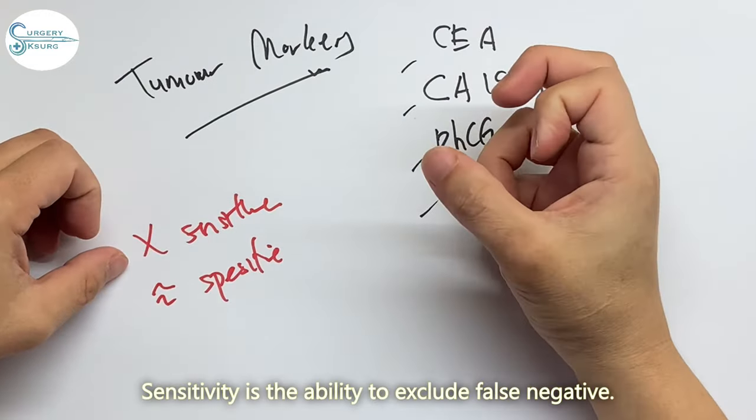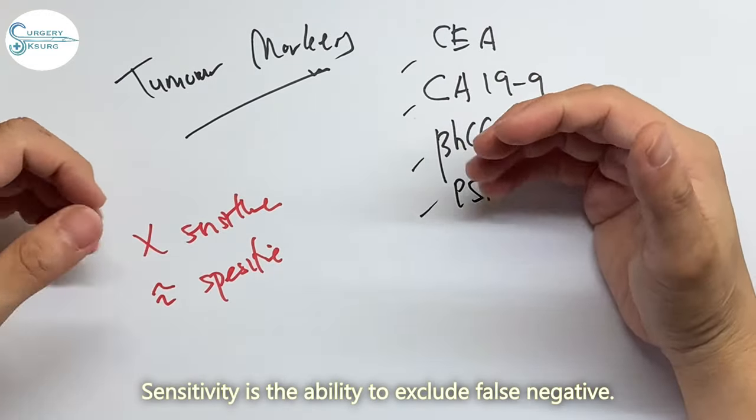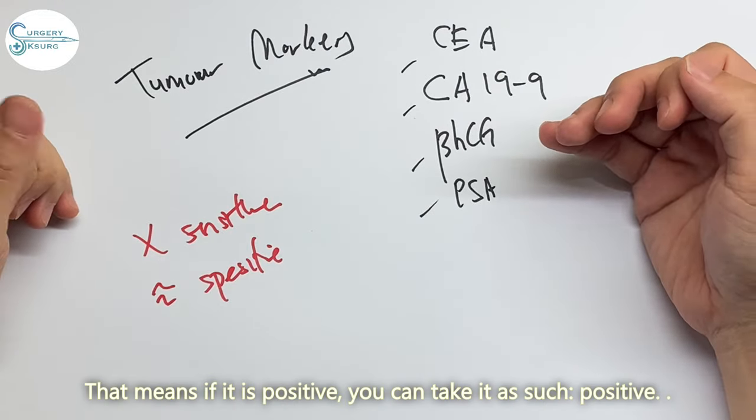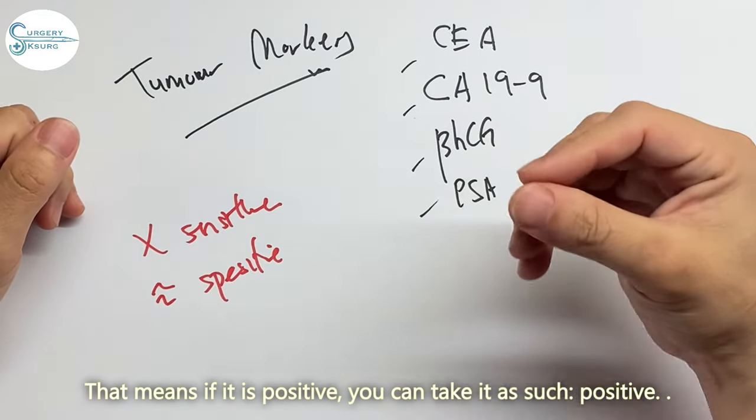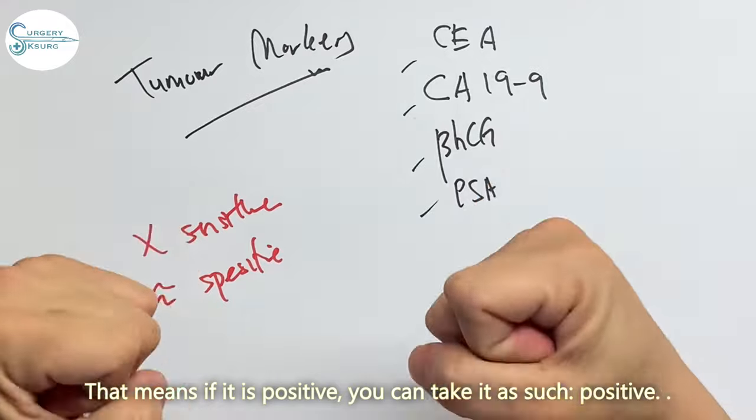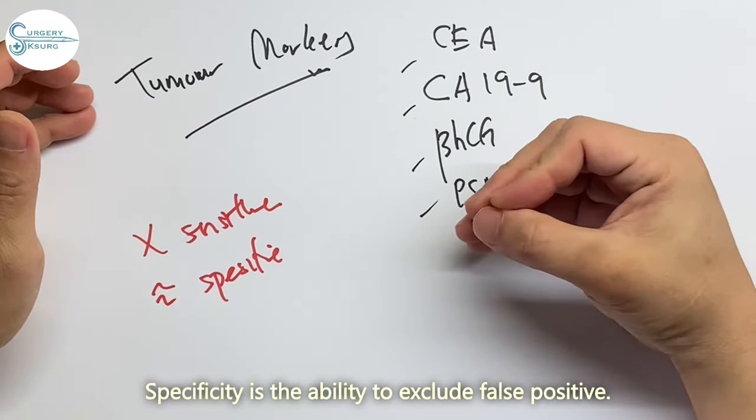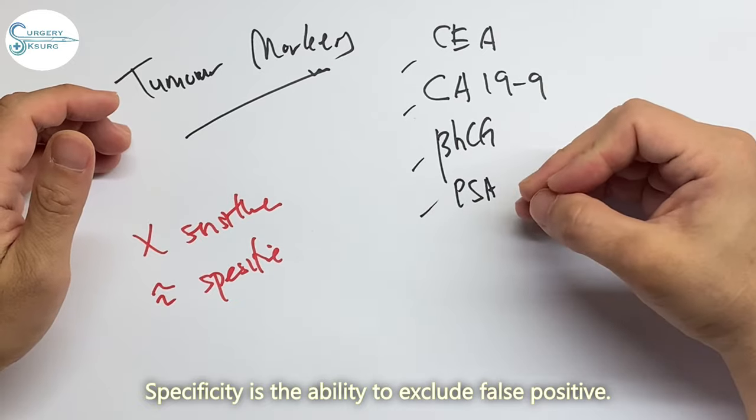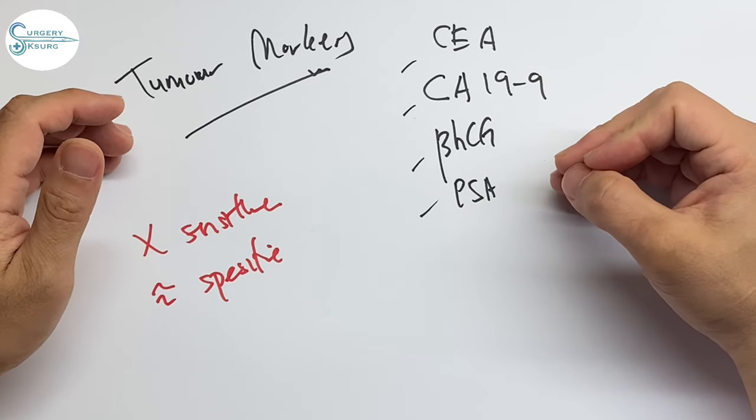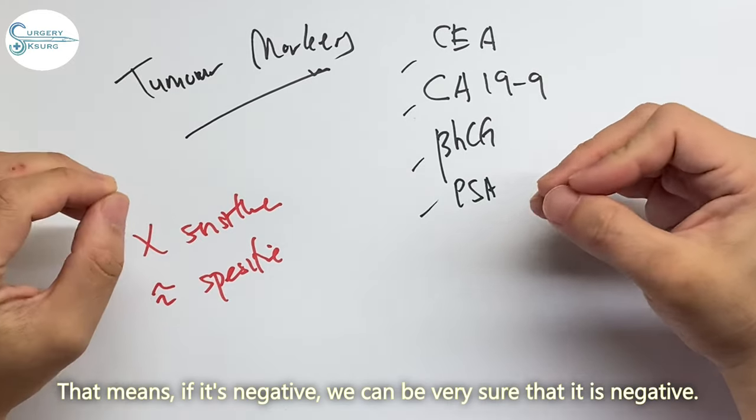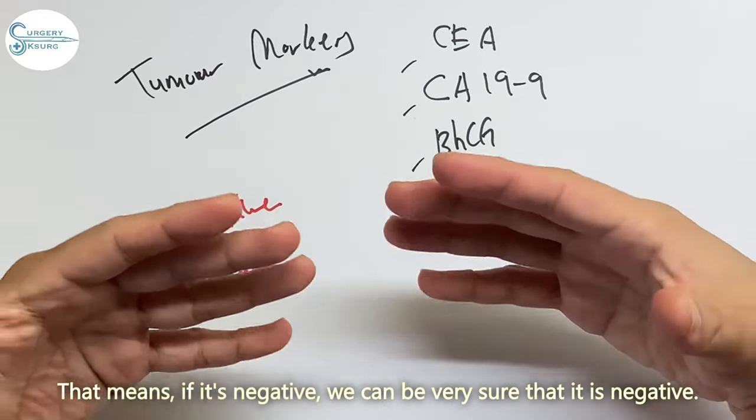Sensitivity is the ability to exclude false negative. That means if it is positive you can take it as positive. Specificity is the ability to exclude false positive. That means if it is negative we can be very sure that it is negative.